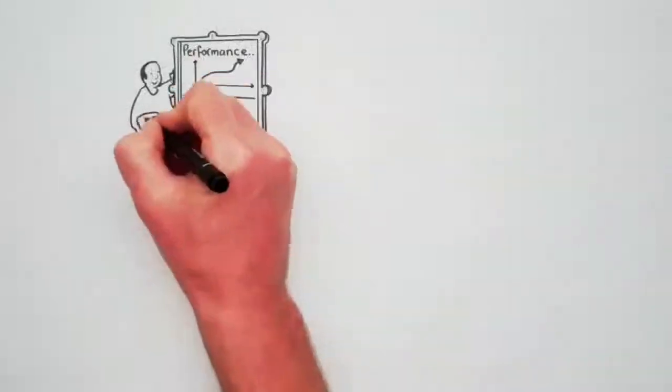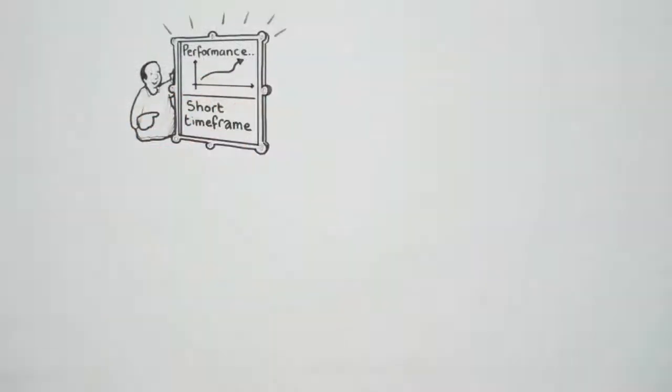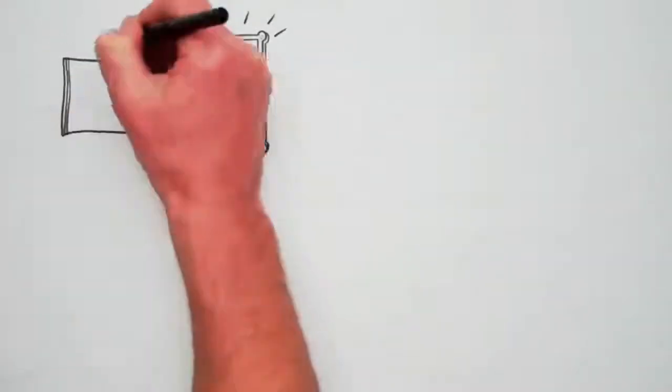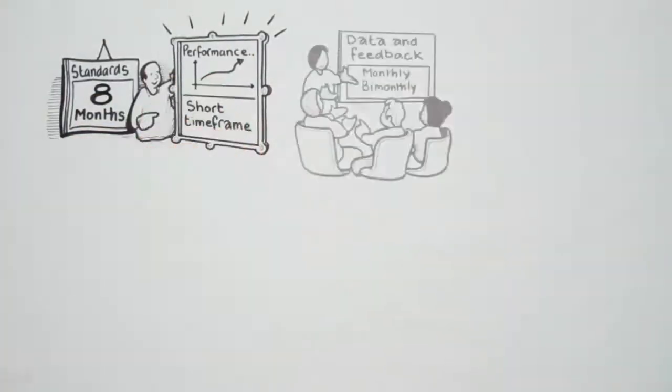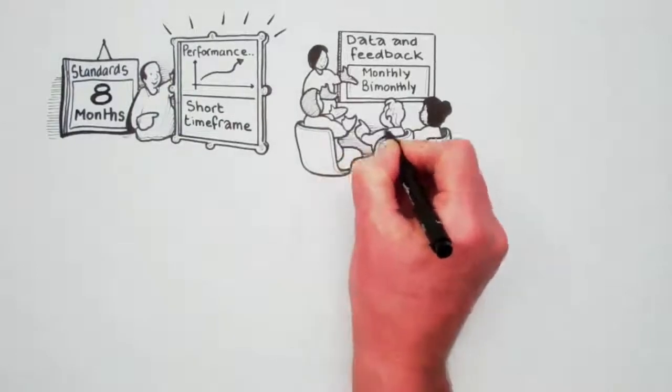It's best to feedback performance in a short time frame. There's no point in telling people they weren't meeting the standards eight months ago. Many trusts look at their data and feedback to colleagues in monthly or bi-monthly meetings.